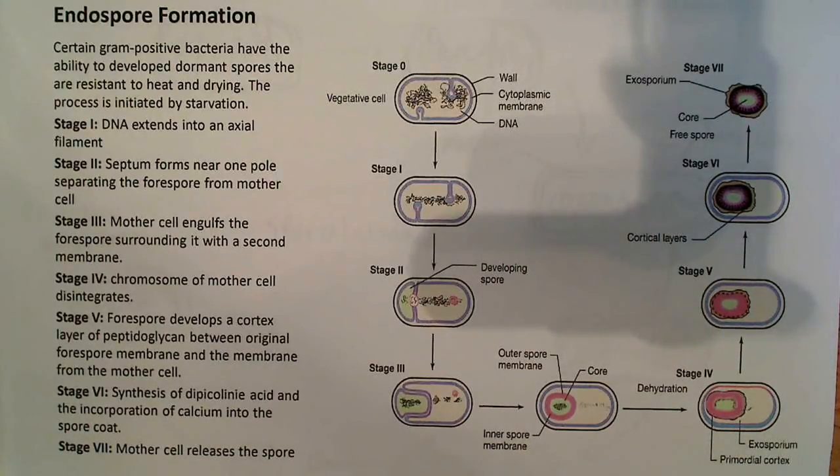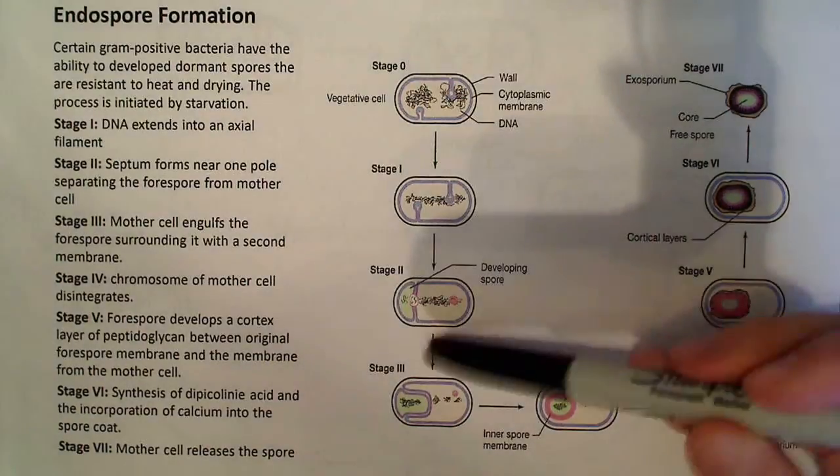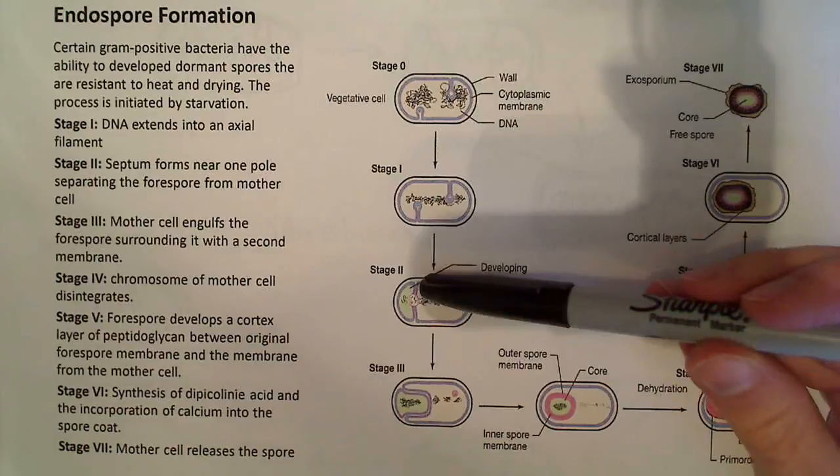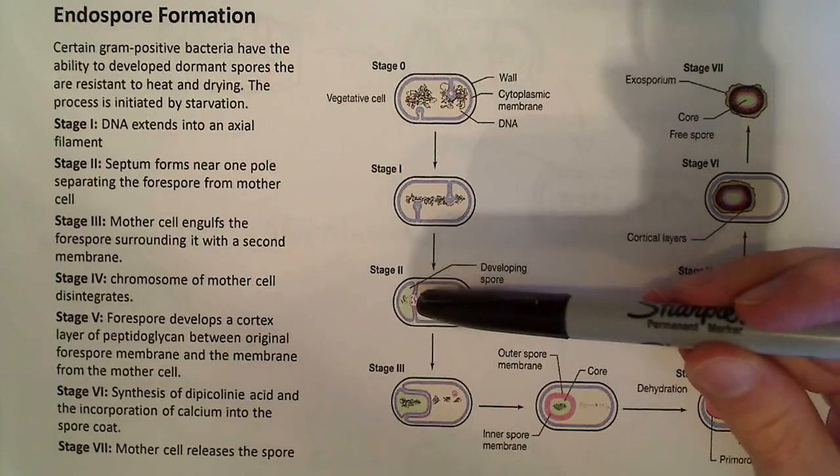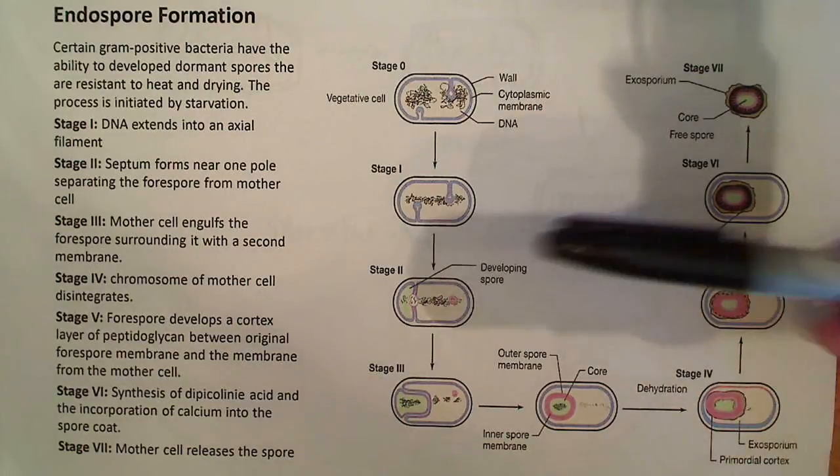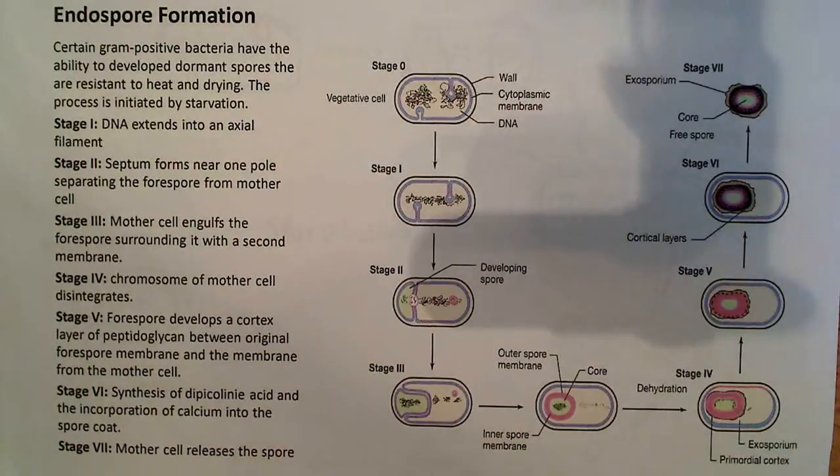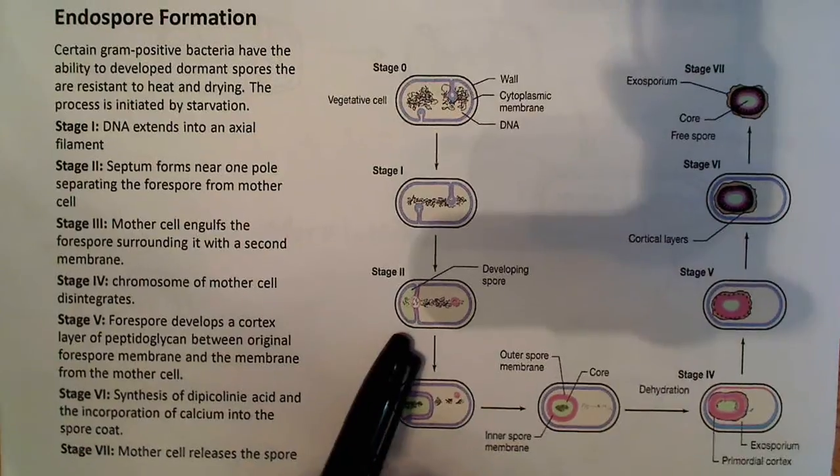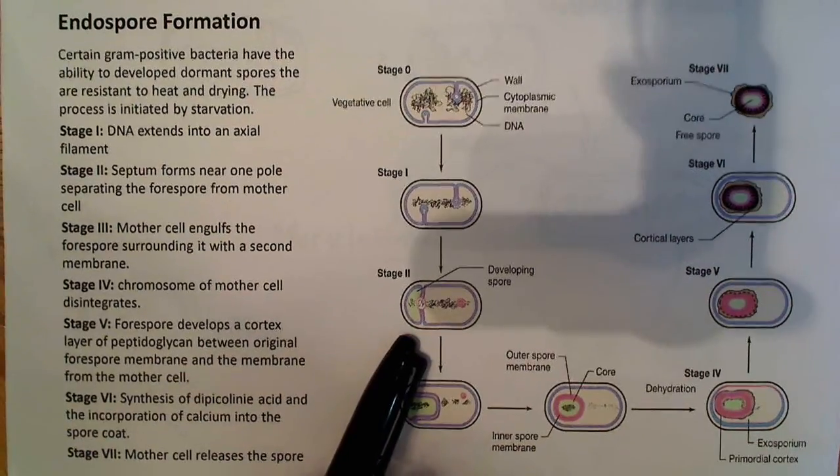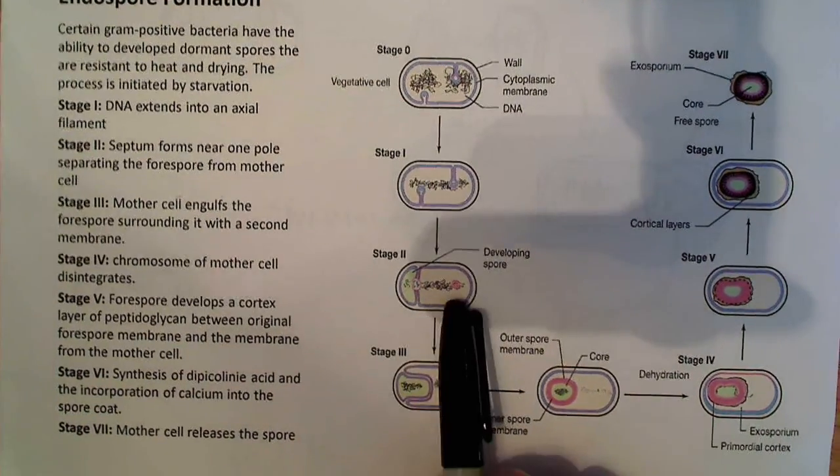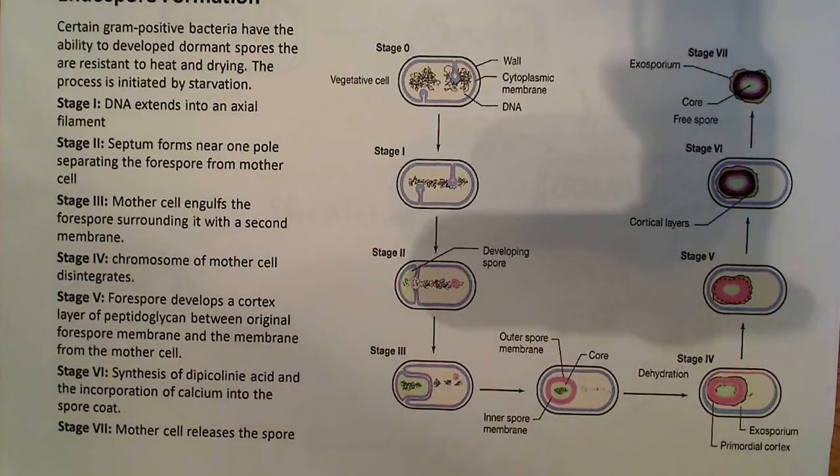And in stage two, a septum forms near the pole, separating the forespore from the mother cell. So that's basically what I said previously, was that this septum and this FtsZ ring is going to form at the pole instead of at the equator. So instead of in the center here, it's going to form at the pole. And what that's going to do is that's going to essentially separate the cell, and you're going to wind up with the forespore and the mother cell. So you're going to end up with essentially two parts in there, separated.